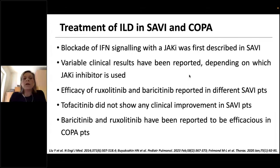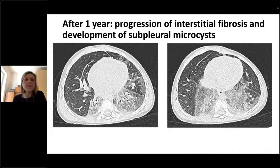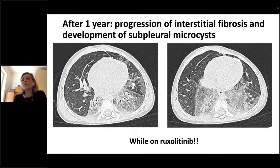Inhibition of interferon signaling with JAK inhibitors was the first described treatment in SAVI, with different clinical results depending on which JAK inhibitor is used. Ruxolitinib and baricitinib have been reported effective in both SAVI and COPA patients, while tofacitinib did not show clinical improvement in SAVI. However, this data comes from case reports only. One patient shown here had disease progression with interstitial fibrosis and subpleural microcysts developing while on ruxolitinib, demonstrating we are far from a gold standard treatment for this condition.